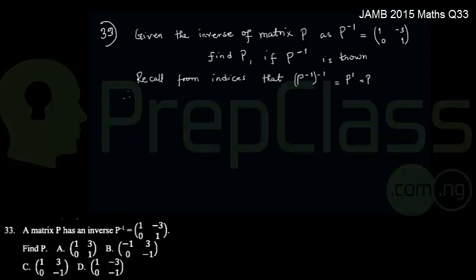Recall from indices class that P raised to the power of minus 1, now raised to an external power of minus 1. According to the rule of indices, when you have multiple powers, multiple powers will multiply. So minus 1 times minus 1 gives me back 1. That's P raised to the power of 1, and we know that any number raised to the power of 1 gives me back the number.